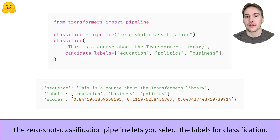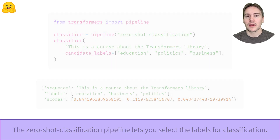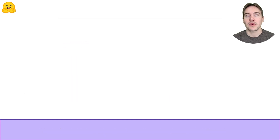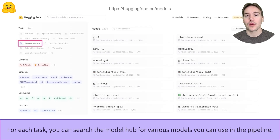Moving on to other tasks, the text generation pipeline will autocomplete a given prompt. The output is generated with a bit of randomness, so it changes each time you call the generator object on a given prompt. Up until now we've used the pipeline API with the default model associated to each task.